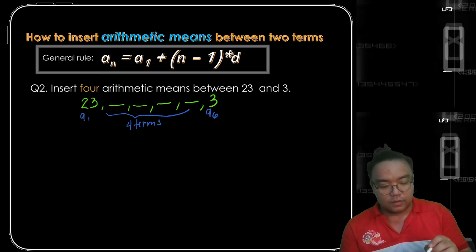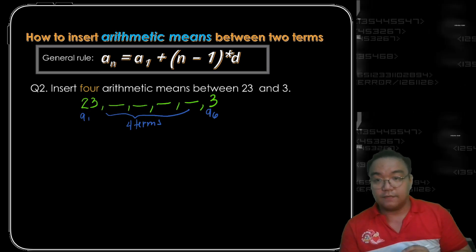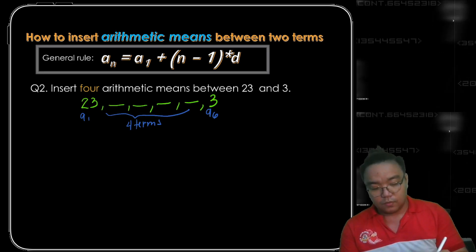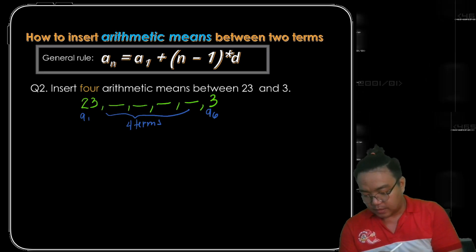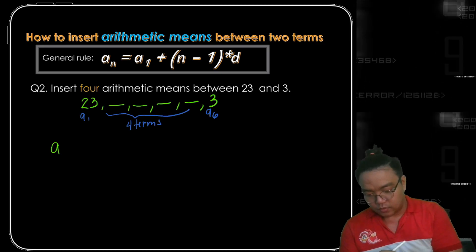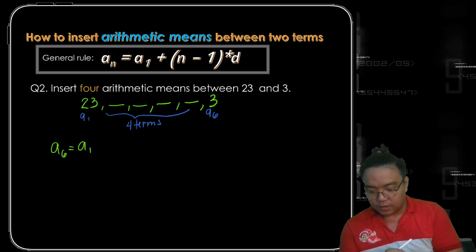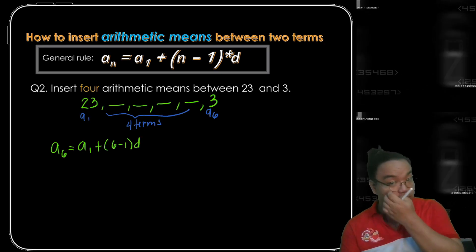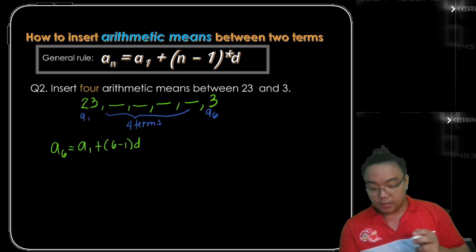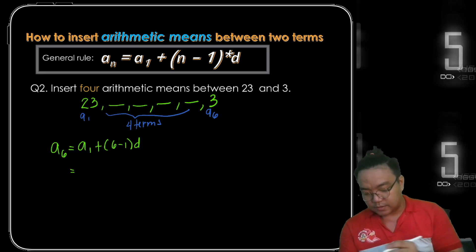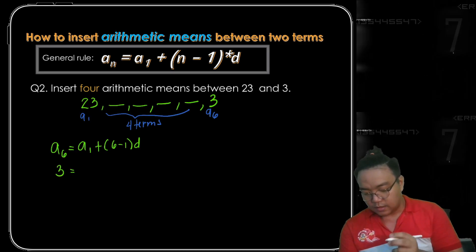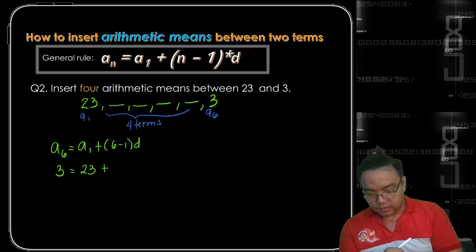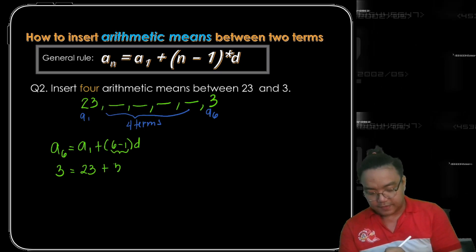Substituting the values to the formula, a sub 6 is equal to a sub 1 plus 6 minus 1 times the common difference d. A sub 6 is equal to 3, a sub 1 is equal to 23, plus 6 minus 1 gives us 5d.